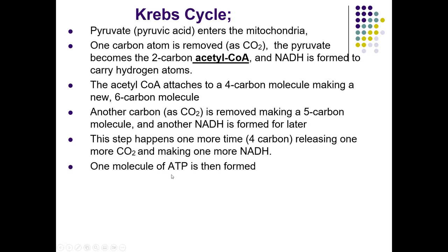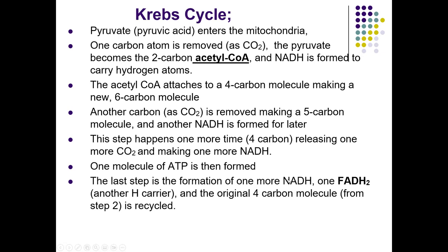One molecule of ATP is formed per turn of the Krebs cycle — this is a bonus, not the main point. When I ask what the main point of the Krebs cycle is, the answer is filling up the NADH wheelbarrows to send to ETS. We also make FADH2 — a double wheelbarrow carrying two hydrogens and two electrons. So the main outputs are NADH, NADH, NADH, and FADH2, all heading to electron transport.